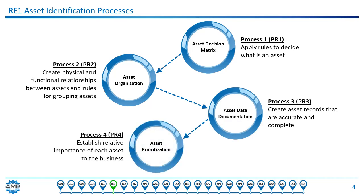The first thing we have to do is develop some rules to say what's an asset — what are we going to include in the program and what are we not going to include? We do this as an organization and think through what we really need to manage. Then, once we know what's going to be included, we can organize things so that we know that an asset belongs to a certain system, and certain parts and spares belong to that particular asset, typically in a computerized maintenance management system or another database.